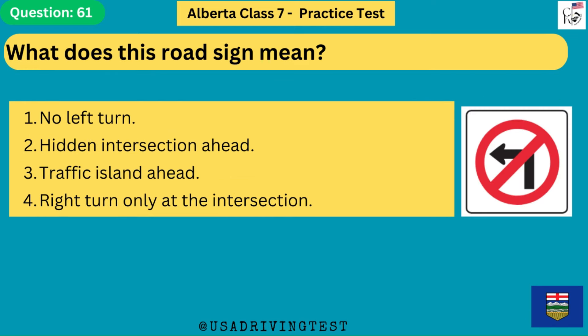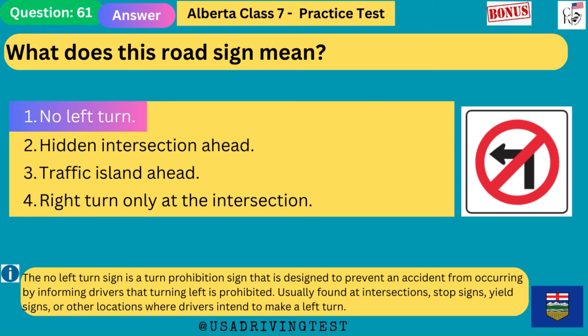What does this road sign mean? 1. No left turn. 2. Hidden intersection ahead. 3. Traffic island ahead. 4. Right turn only at the intersection. The answer is 1: no left turn. The no left turn sign is a turn prohibition sign designed to prevent an accident by informing drivers that turning left is prohibited. Usually found at intersections, stop signs, yield signs, or other locations where drivers intend to make a left turn.